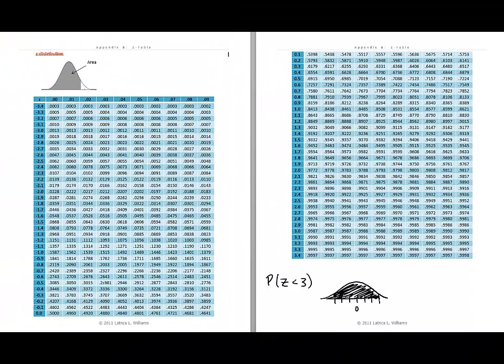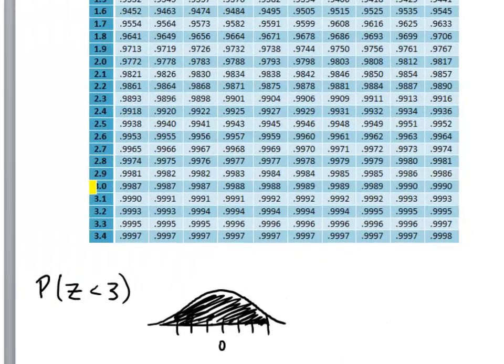And so using our normal table, we'll go to a Z score of 3 and its corresponding probability is 0.9987. So the probability that the mean gestation length is less than 272 days for this sample of 64 individuals is 0.9987.